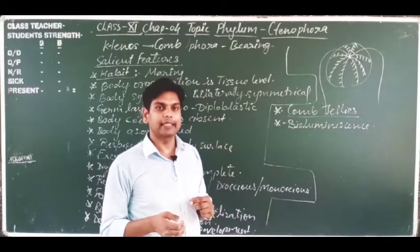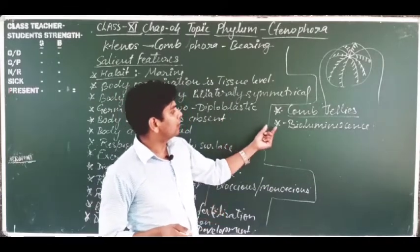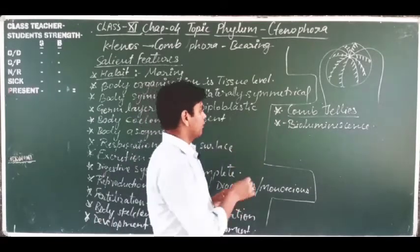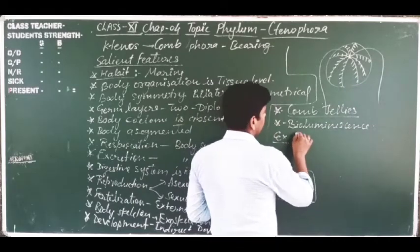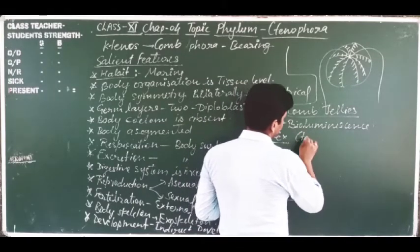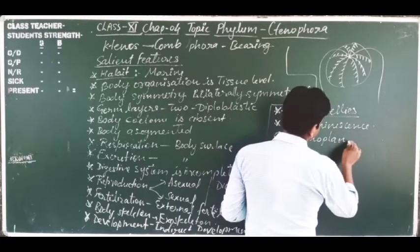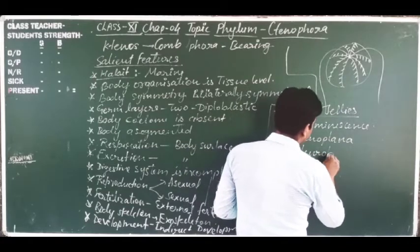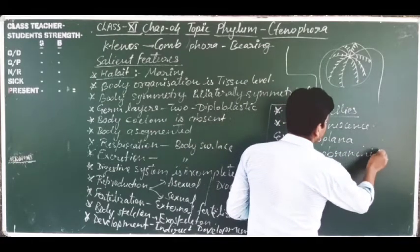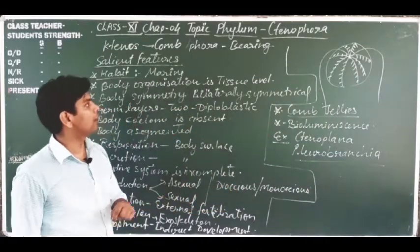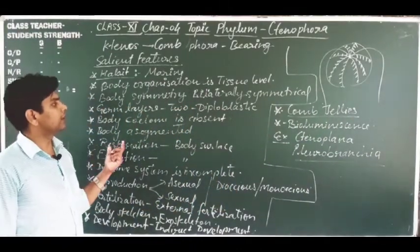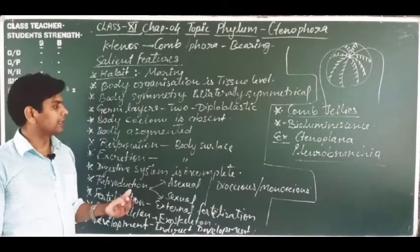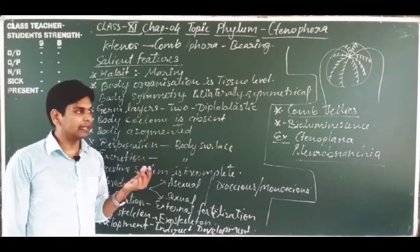Bioluminescence is an advanced feature of these animals. Examples of Phylum Ctenophora are Ctenoplana and Pleurobrachia. This is all about Phylum Ctenophora. These animals arise from Coelenterata.